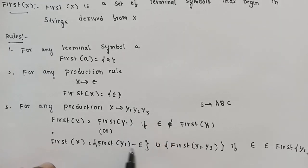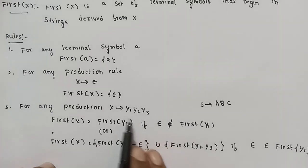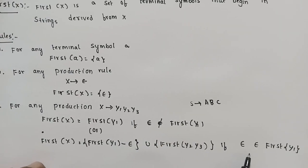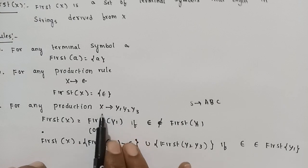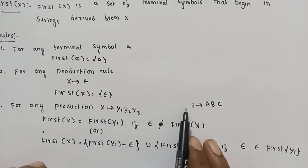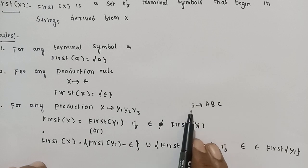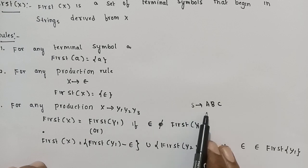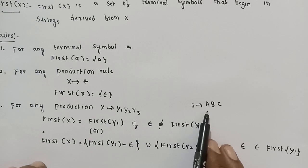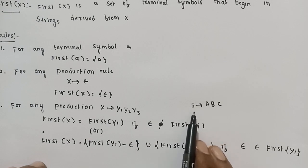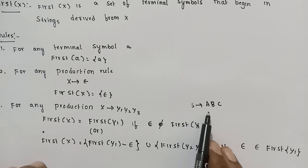First of X is equal to First of Y1 minus epsilon, union First of Y2, Y3, if epsilon belongs to First of Y1. So if epsilon is in First of Y1, then First of X equals First of Y1 minus epsilon, union First of Y1.